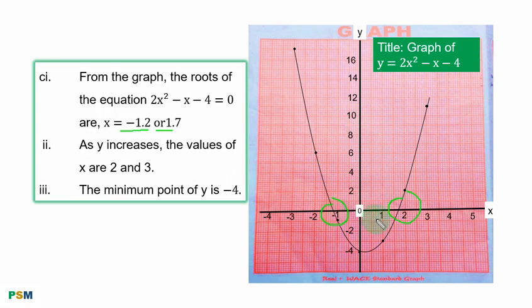Then, if you count from 1 to the right, you have 1.7. Roman numeral 2, as Y increases, the values of S are 2 and 3.